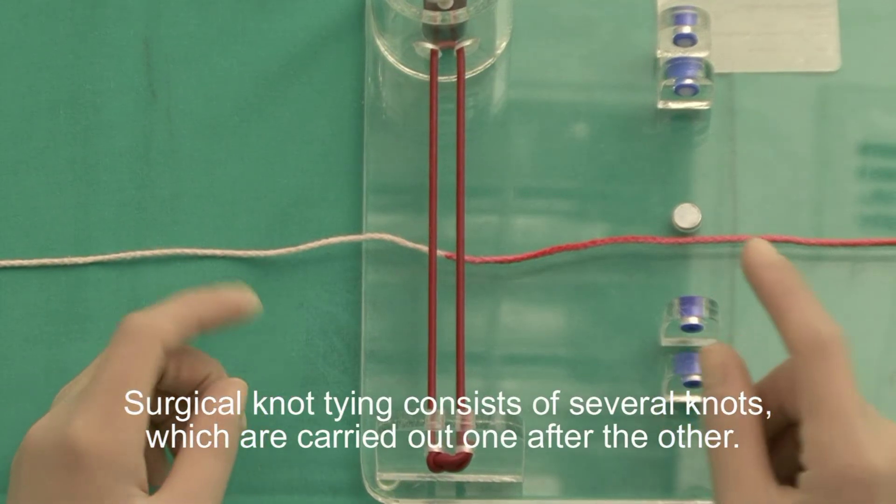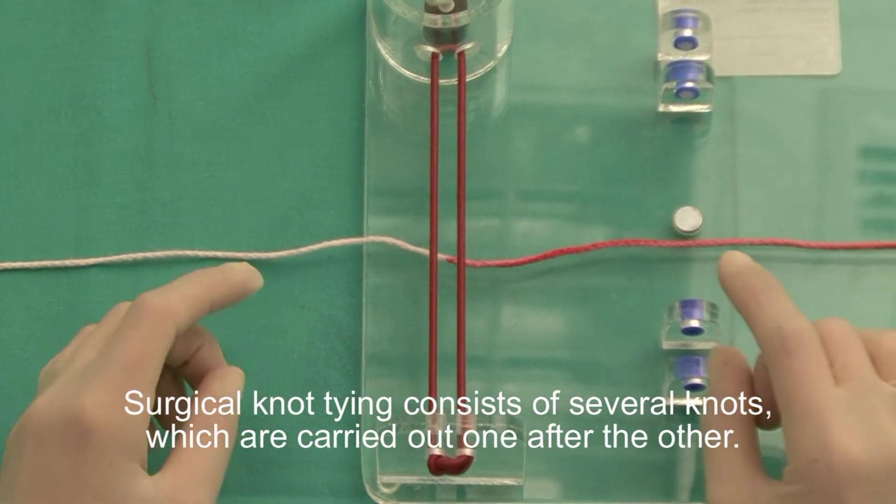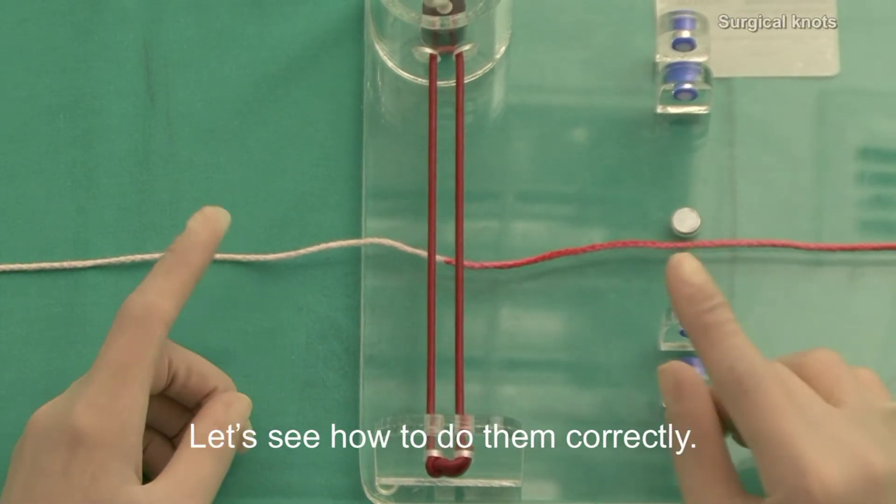Surgical knot tie-in consists of several knots, which are carried out one after the other. Let's see how to do them correctly.